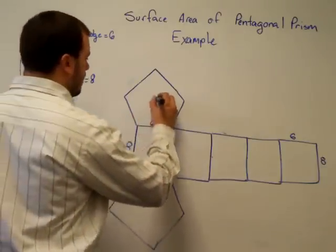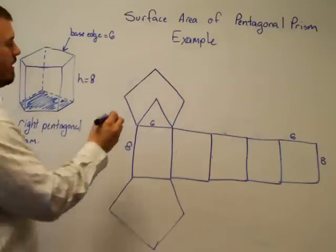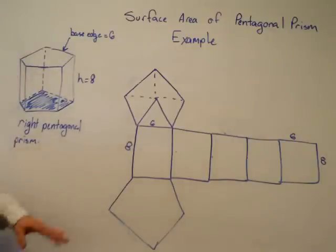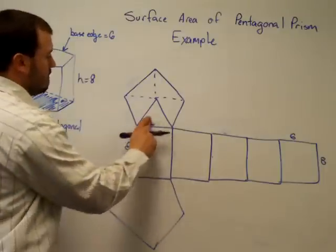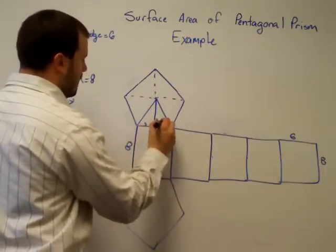So, to do the pentagon, we've talked about how to do this. It's to divide the figure into congruent triangles. Isosceles triangles that we can find the area of. So, each of these pieces would be three.